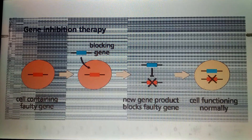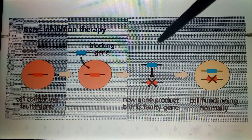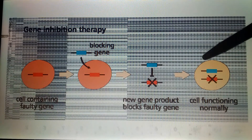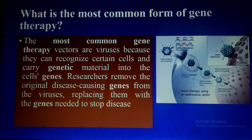In gene inhibitor therapy, sometimes genes in our body produce harmful products. In this approach, a gene is inserted — via gene therapy — that produces a product which blocks the activity of the unhealthy or faulty gene in our body. This is known as gene inhibitor therapy.